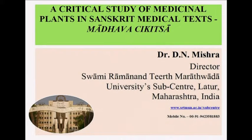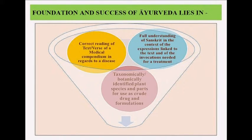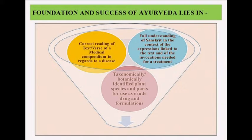To become a good Ayurvedic practitioner, there are three things required. The success of Ayurveda lies in correct reading of the texts, verses, or medical compendiums; then the full understanding of the Sanskrit meaning; and finally, the taxonomically correct identification of plants, the botanical identification, and the correct crude parts.